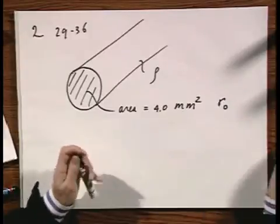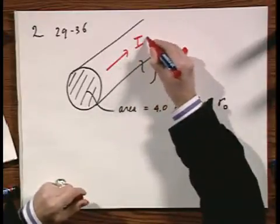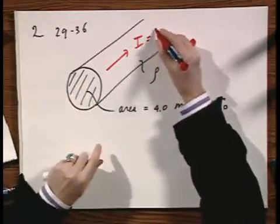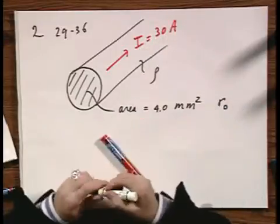And there is a current in the beginning going through, which is constant, conduction current, uniformly distributed over the surface of 30 amperes. That's the situation in the beginning. It's a copper wire.